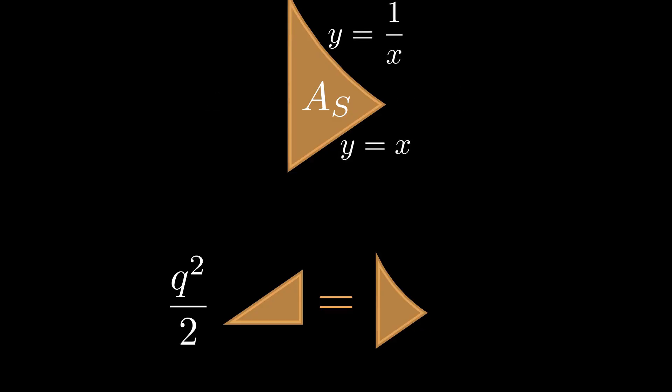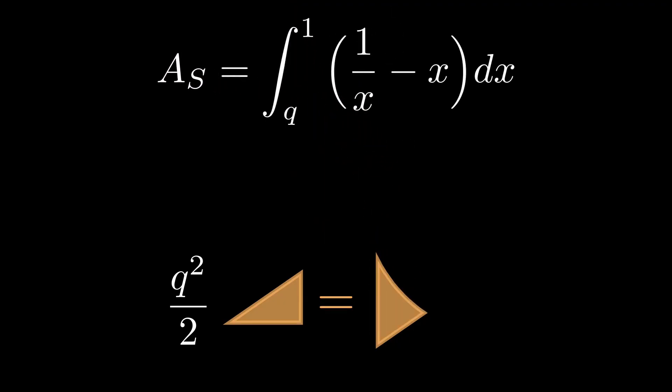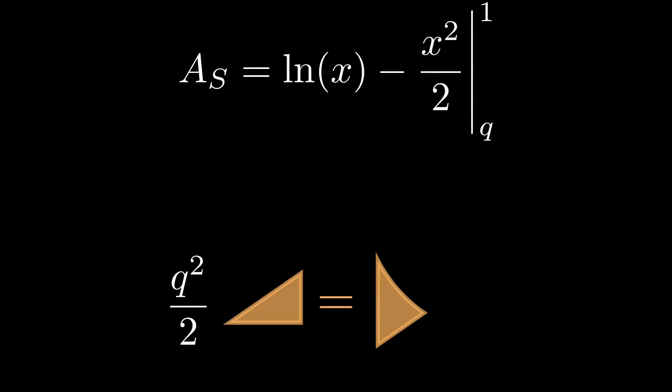We also know the top and bottom bounds of As. The bottom is defined by the line y equals x, and the top is defined by the curve y equals 1 over x. This means we can find the area with an integral. The strange area is equal to the integral of 1 over x minus x from q to 1. Both of these terms have well-known antiderivatives, which we can take. We can then evaluate the antiderivative at the bounds x equals 1 and x equals q.